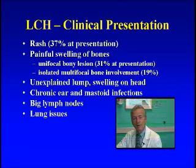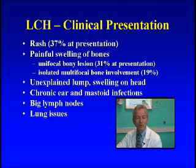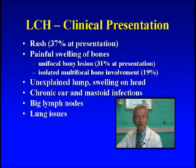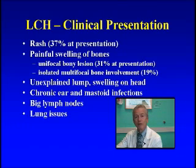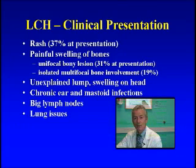Some children have breathing problems because the disease is in the lung — they might have wheezing like a child with asthma, or shortness of breath. In some adults there is significant lung disease, and the lung can actually break open, causing what's called a pneumothorax, which produces extreme pain and very dramatic shortness of breath.